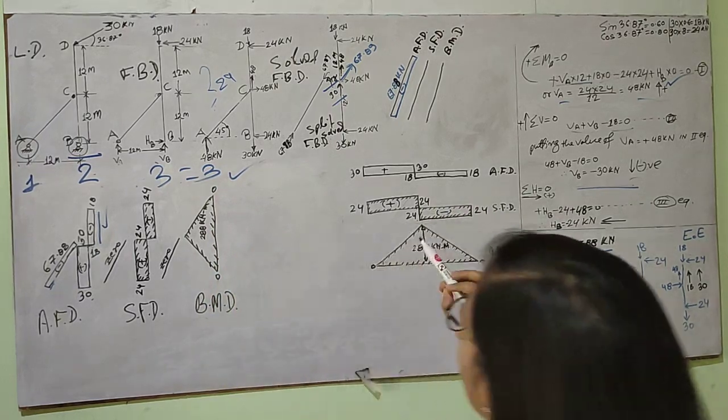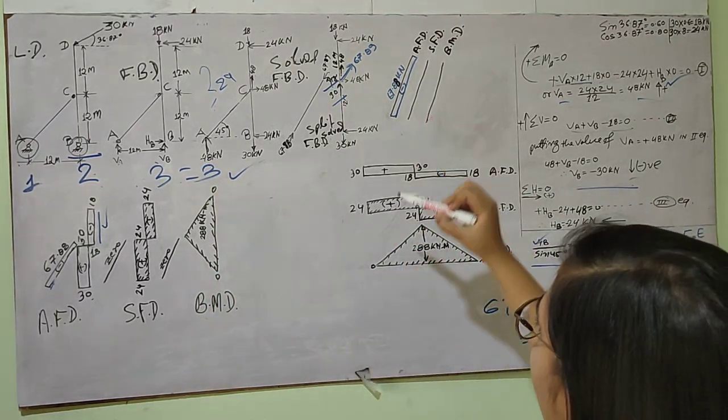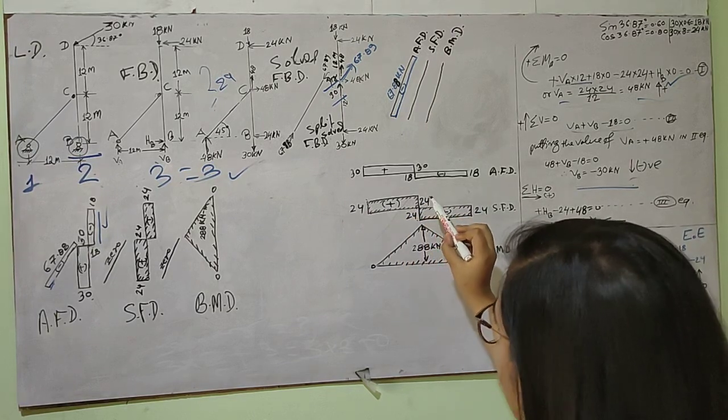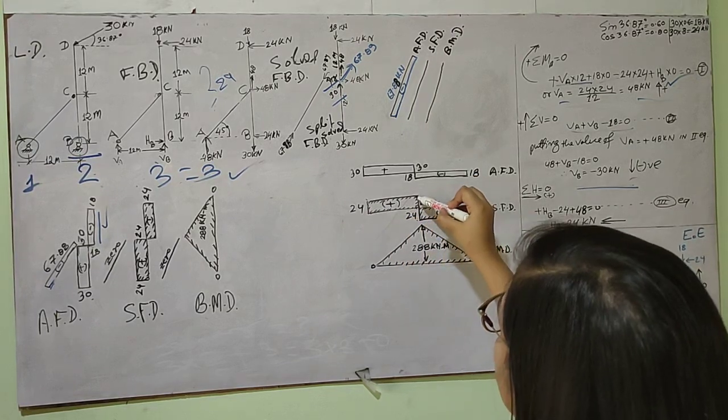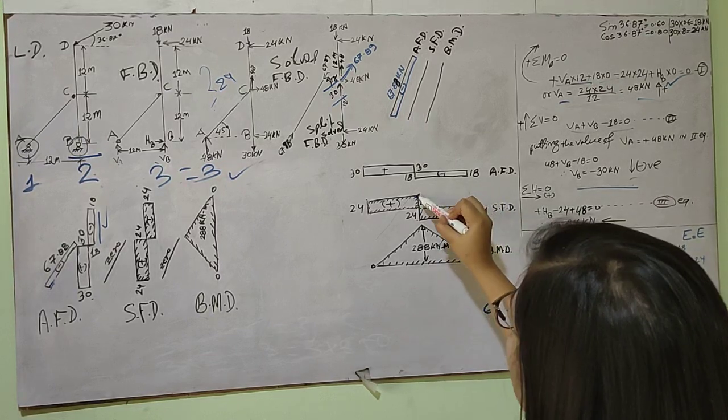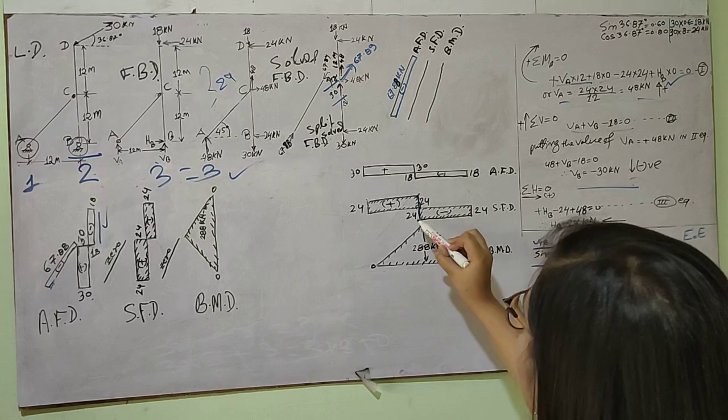24 kilonewtons is acting upward, so it is positive and it will go straight. As there is no loading, it will go straight. Again there is a drop of 48 kilonewtons downward. So in order to go 48 downward, 24 you should go in this ordinate and 24 in this ordinate, so it is 48.